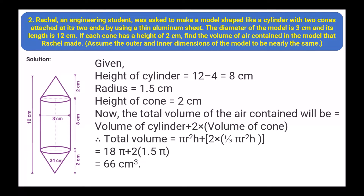Next: Rachel, an engineering student, was asked to make a model shaped like a cylinder with two cones attached at both ends using thin aluminum sheet. The diameter of the model is 3 centimeter and its total length is 12 centimeter. Each cone has a height of 2 centimeter, so the two cones together account for 4 centimeter.